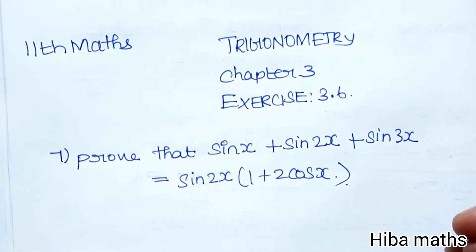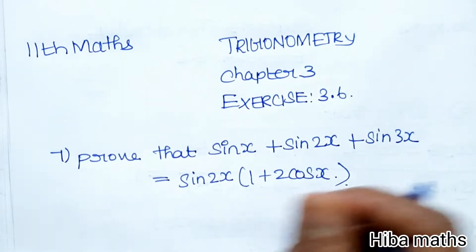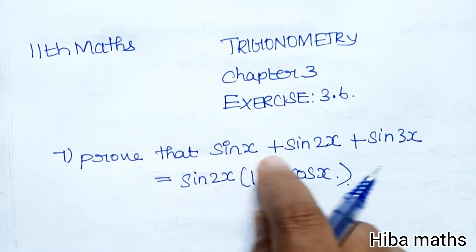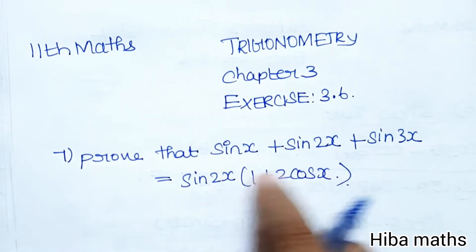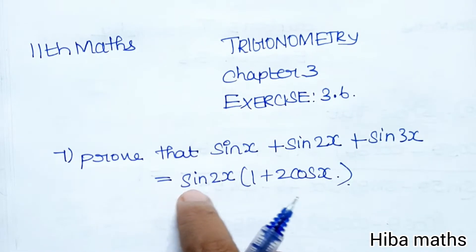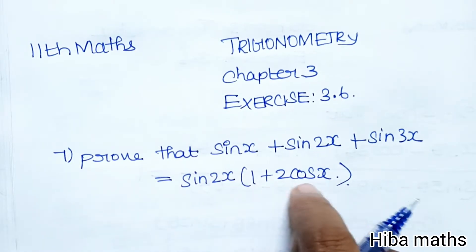Hello students, welcome to Hiba Maths. 11th standard maths, Trigonometry Chapter 3, Exercise 3.6, Question 7. Prove that sin x + sin 2x + sin 3x = sin 2x (1 + 2 cos x).